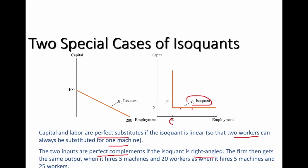In between these two extreme cases, we find our normal isoquants — the convex curve we usually see. An important observation is that the more curved the isoquant, the smaller the substitution effect. There is no substitution effect with the right angle shape, while the linear isoquant is the other extreme case with maximum substitution.